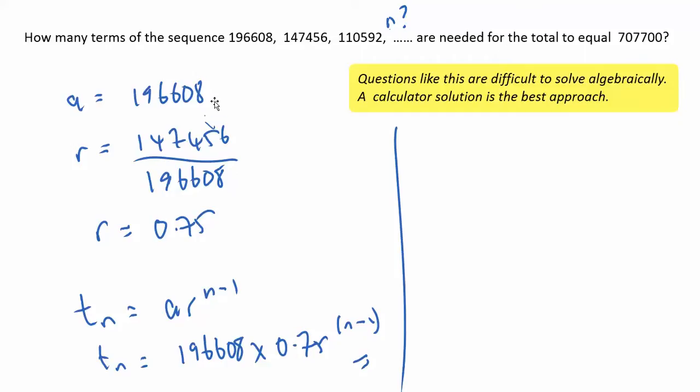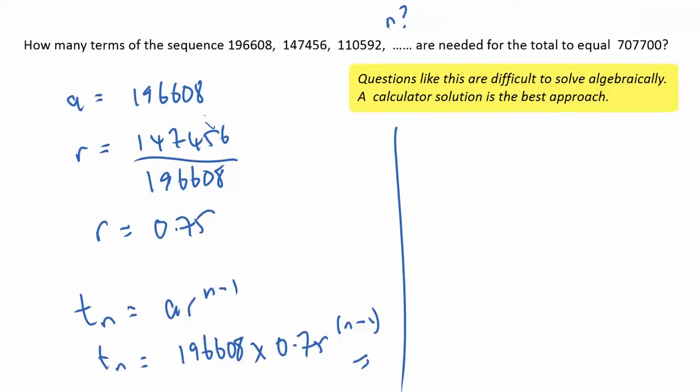So we'll set it up, identifying the first term, the common ratio 0.75, and then an expression for the Nth term, and we'll simply put that into our calculator.